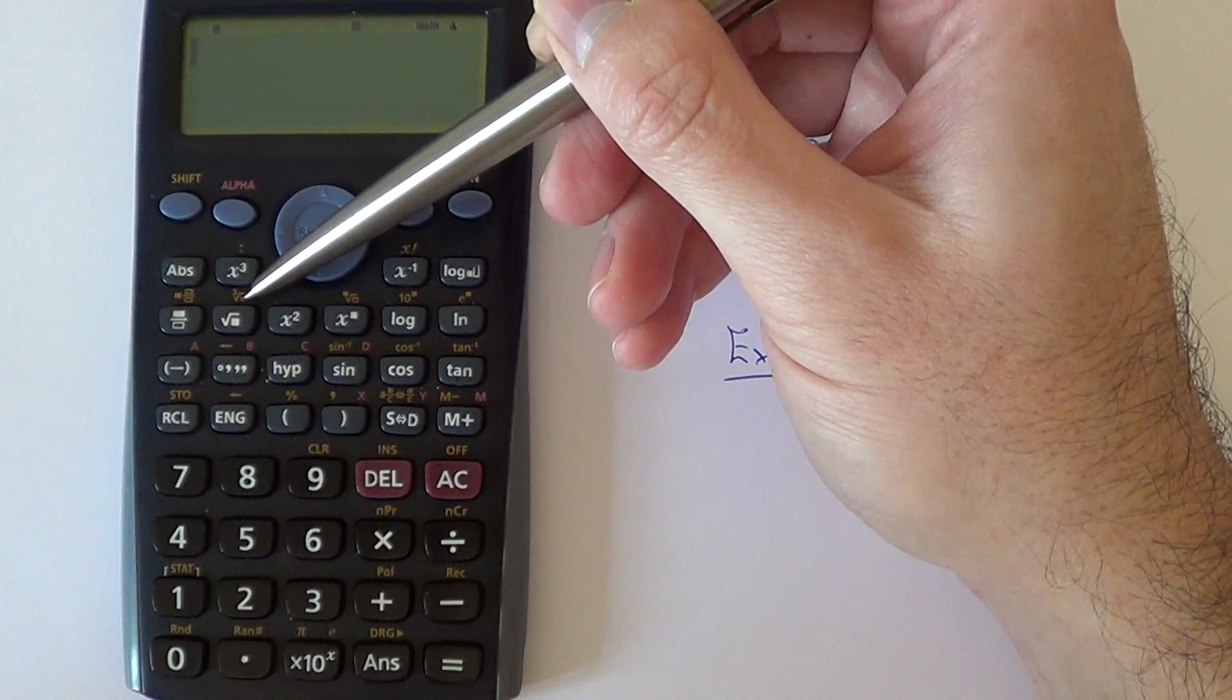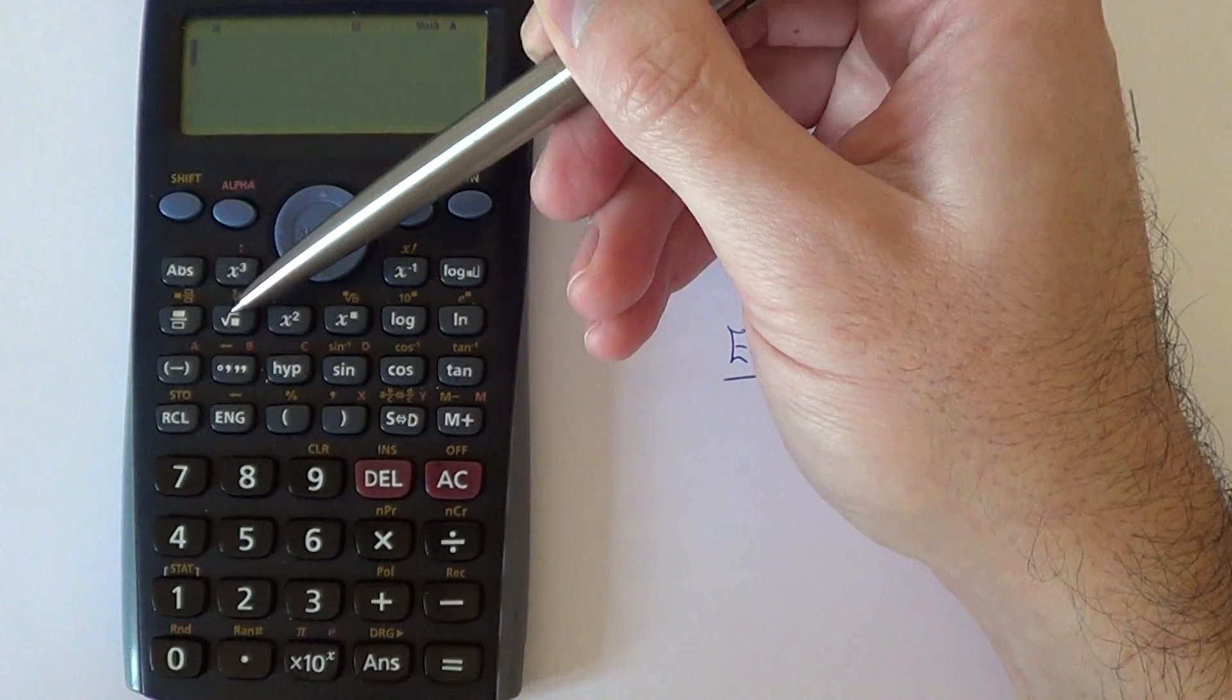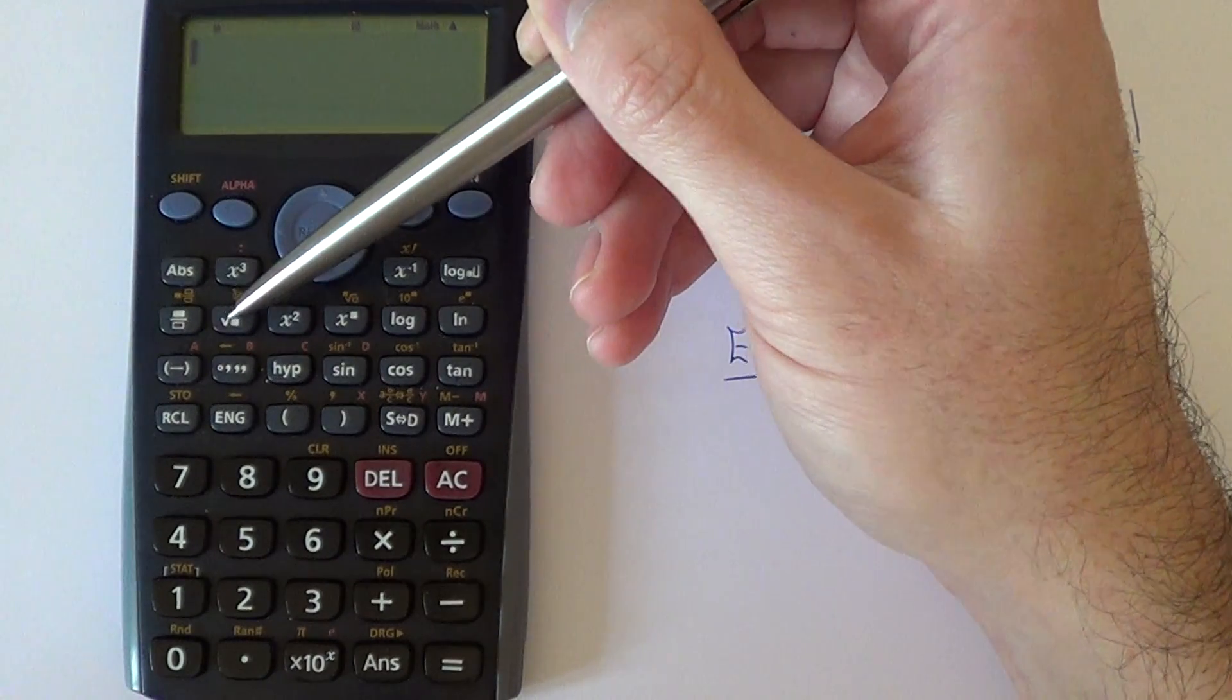So to get the second function you will need to hit the shift key and then press the square root there.